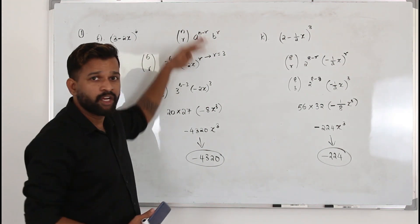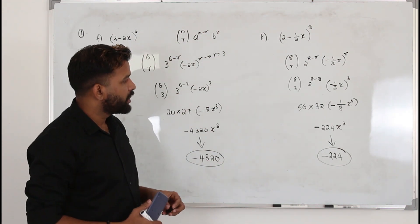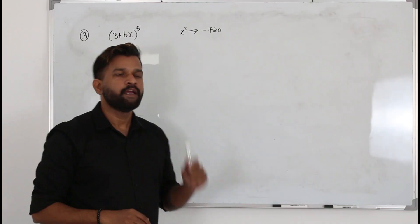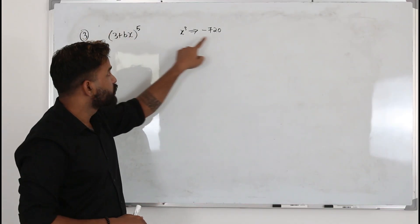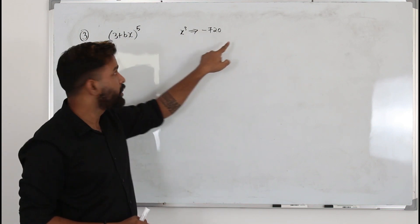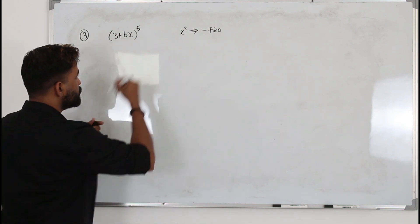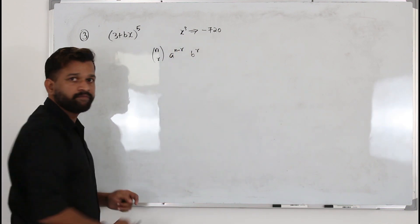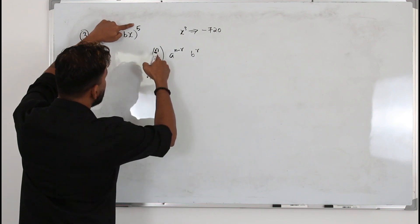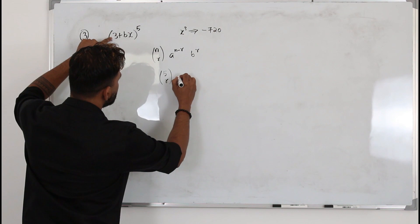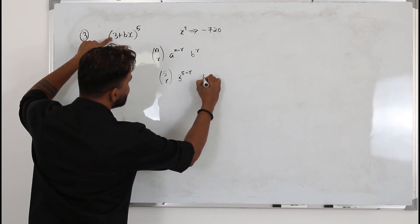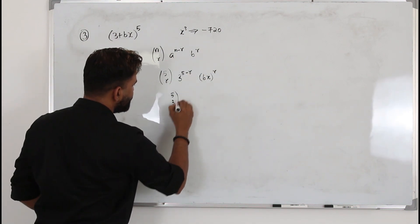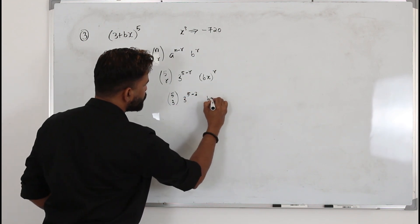That's how we use the general term to find the coefficient of any x to any power. Now look at this next question — here the coefficient of x³ is already given as −720, and we need to find the value of B. Use the general term nCr · a^(n−r) · b^r. Replace n by 5: 5Cr, first term is 3^(5−r), second term is (bx)^r. Replace r by 3: 5C3 · 3^(5−3) · (bx)³.